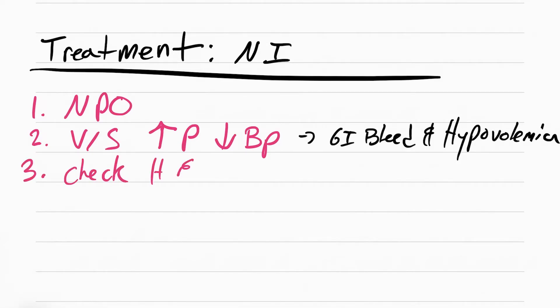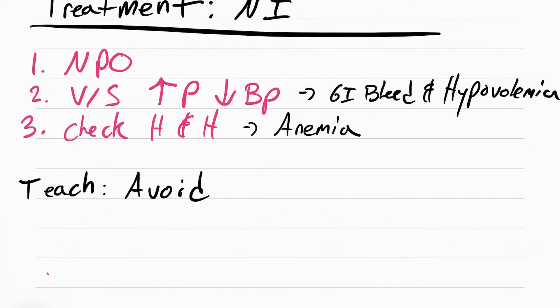The next thing you want to do is check for hemoglobin and hematocrit, H and H. You're checking to see if the patient has any anemia from the GI bleed. You have to know that normal hemoglobin levels are 12 to 18, and hematocrit levels are the hemoglobin times 3. So if hemoglobin is 12, hematocrit is 36.